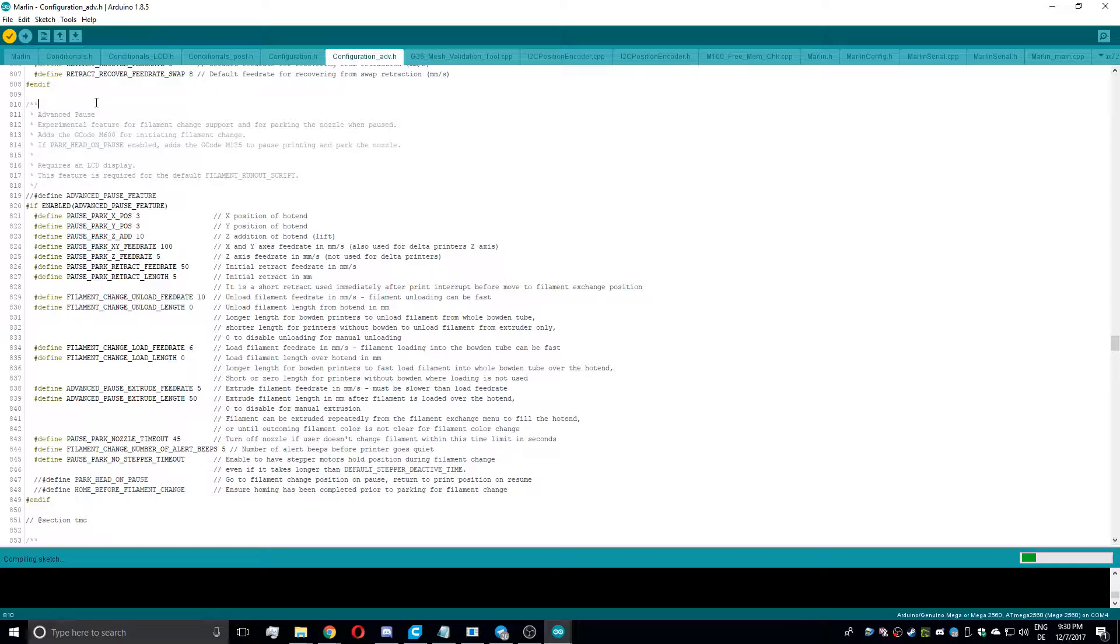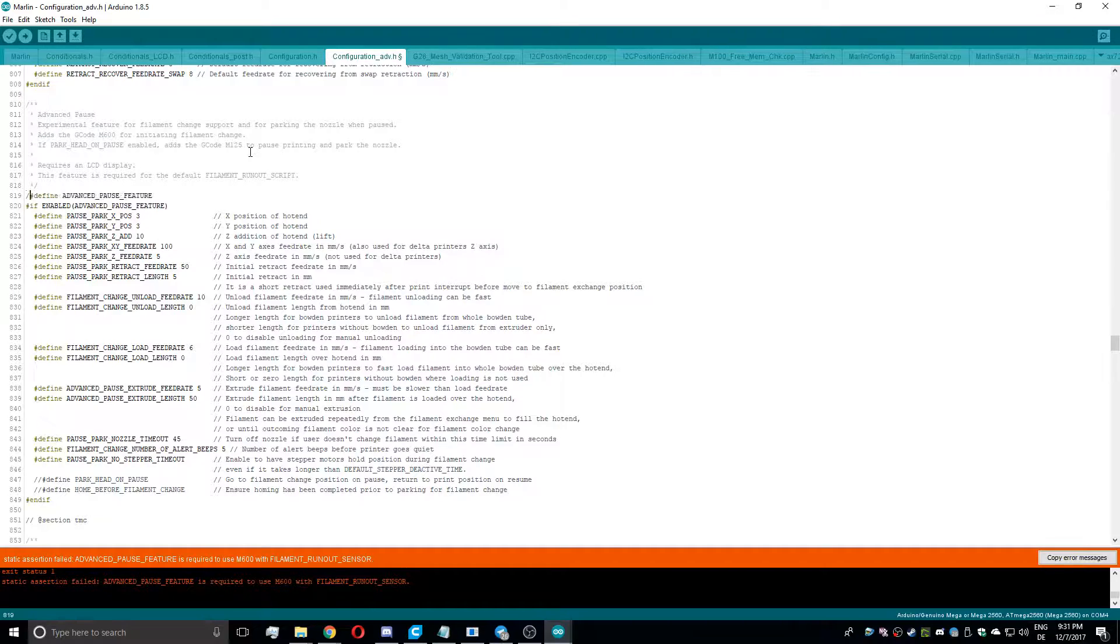But let's get started. As a first step, we need to enable the advanced_pause_feature in the Marlin configuration_adv.h file by simply removing the two forward slashes at the beginning of the line.